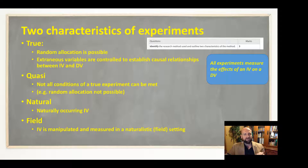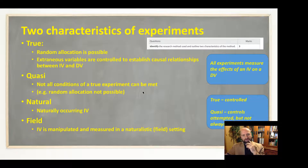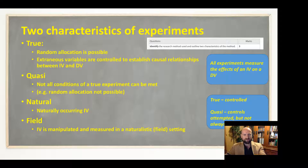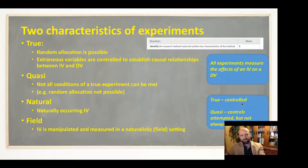That's how you answer question 1a if it's an experiment — and how you get the full three marks. A quick distinction: true experiments are controlled, and we can control extraneous variables as much as possible. For quasi, natural, and field experiments, we attempt to control for extraneous variables, but it's not always possible because we're in a real-life environment, the independent variable occurs naturally, or we can't randomly allocate.